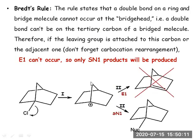Bredt's rule is relevant here. After departure of the leaving group, a carbocation is formed. If elimination were to occur, a double bond would form at the bridgehead, which is not possible — it would be highly unstable. Bredt's rule states that no double bond is permitted at a bridgehead. Therefore, this substrate will never undergo elimination; rather, it will undergo substitution (SN1), and only the SN1 product is obtained.